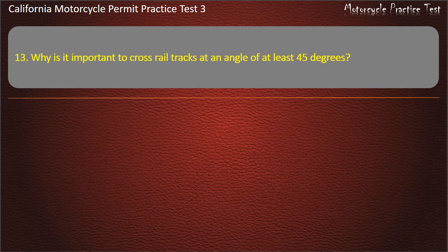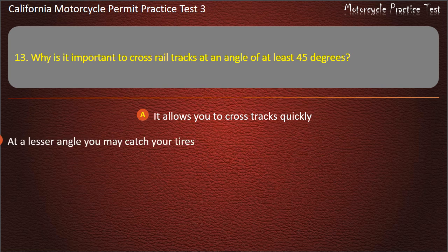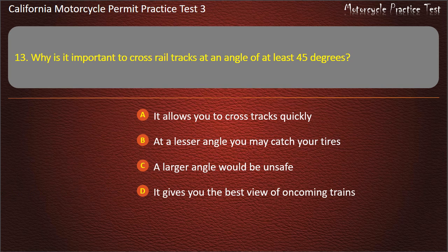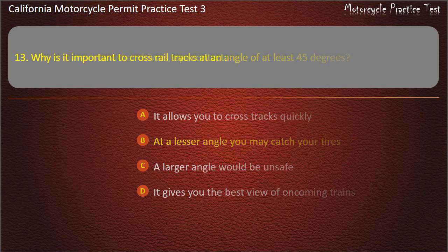Question 13. Why is it important to cross rail tracks at an angle of at least 45 degrees? It allows you to cross tracks quickly, at a lesser angle you may catch your tires, a larger angle would be unsafe, or it gives you the best view of oncoming trains. Answer: At a lesser angle you may catch your tires.